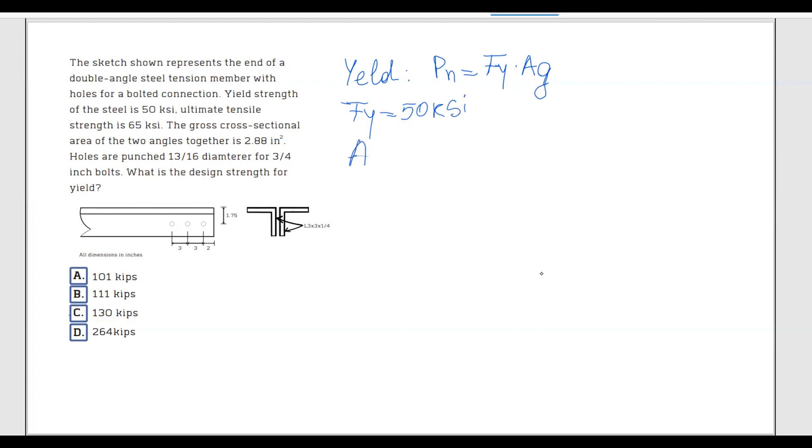And Ag, the gross cross-sectional area, is also given to us in the problem as 2.88 inches squared.